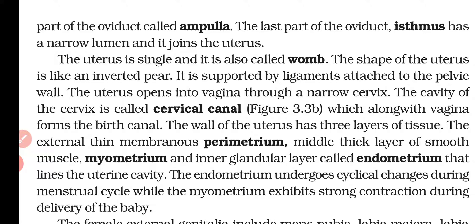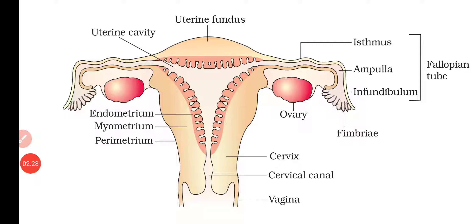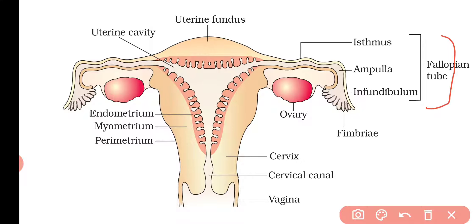After the infundibulum, the oviduct opens into a wider area called the ampulla. The last part of the oviduct is the isthmus, which has a narrow lumen and is joined to the uterus. So in the diagram, the fallopian tube contains the fimbriae, infundibulum, ampulla, and the narrow isthmus connected to the uterus.